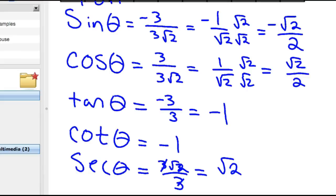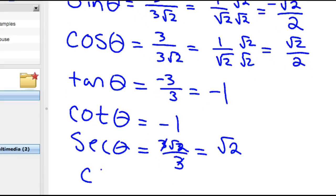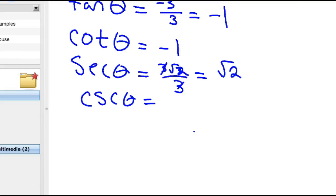And then cosecant theta is the reciprocal of sine, which is negative 3 root 2 over 3, which simplifies to negative root 2 if the 3s cancel out.